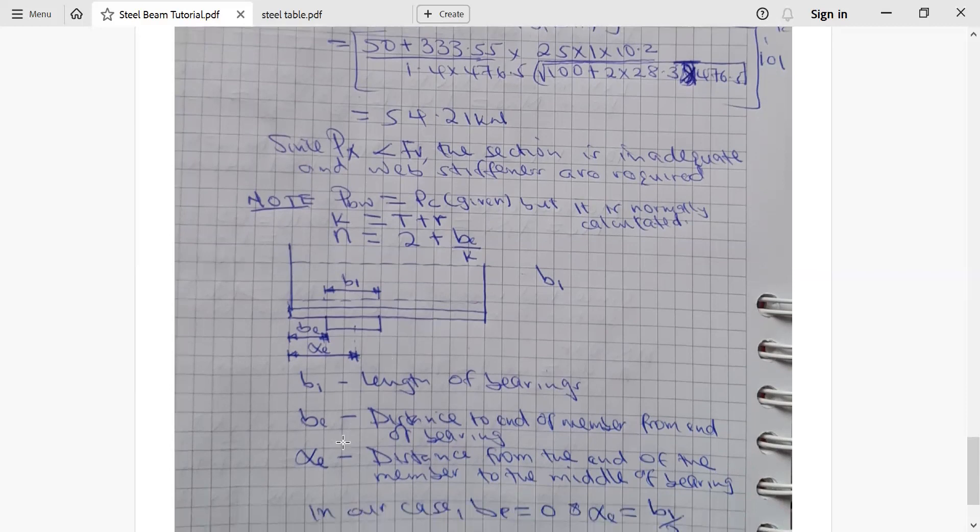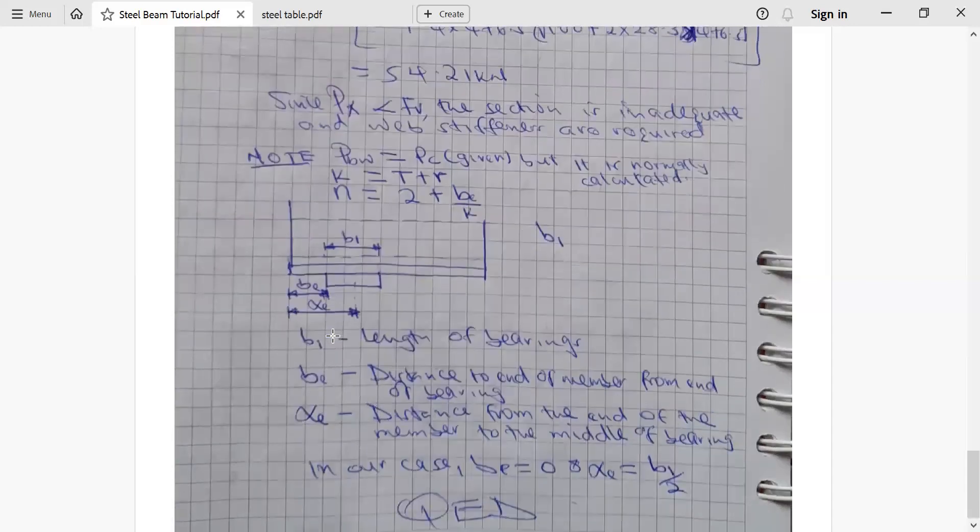Now, if that's the case, you find that this alpha_E is normally taken from the end of the beam to the middle of the bearing. But for our case, the end of the beam and end of bearing are at the same level. So basically, this alpha_E is only equivalent to a half of bearing length, which is a half of B1. That's why we got it as 50, as above, because B1 is 100, so alpha_E is 50.